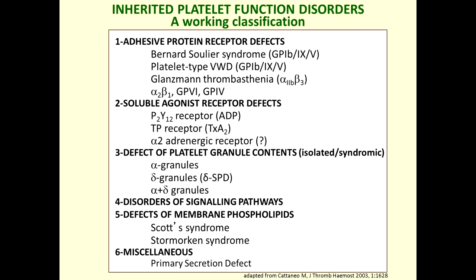There is also a miscellaneous group of disorders of the signaling pathways activated during platelet activation. Some very rare forms are defects of membrane phospholipids — conditions in which the procoagulant activity of platelets is altered: a loss-of-function condition called Scott syndrome, and a gain-of-function condition called Stormorken syndrome. Finally, there is a miscellaneous group of primary secretion defects — a not-well-defined but fairly frequent group of disorders in which the secretion of granular content is defective while the granular content itself is normal.